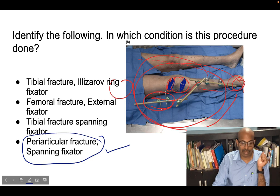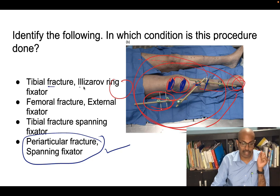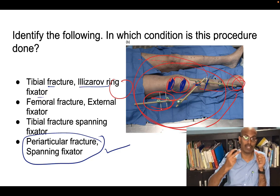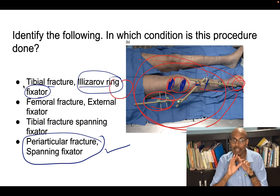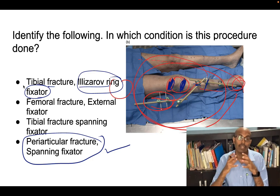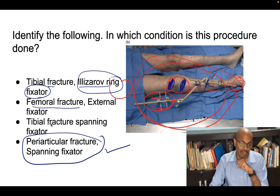A tibial shaft fracture does not need a spanning fixator — just two pins above and two pins below. The Ilizarov ring fixator is different: it has a ring-like structure around the whole limb, whereas this is an external fixator with Schanz pins and connecting rods. Ilizarov fixators are used in open fractures, infections, and non-unions. The correct answer is periarticular fracture managed with a spanning external fixator.